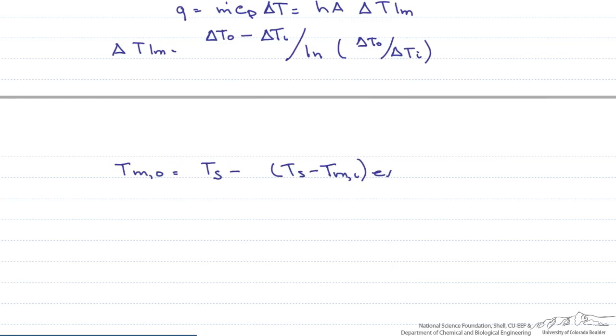times the exponential of minus pi times the diameter times the length of the pipe times that H that we just calculated divided by our mass flow rate times our heat capacity. When we put the numbers into this equation, we find that the mean temperature coming out of the tube is 48 degrees Celsius.